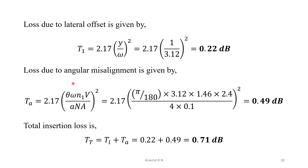Next, we calculate the loss due to angular misalignment: Ta = 2.17 × (θ × ω × n1 / (λ × NA))². Substituting all known values gives an angular misalignment loss of 0.49 dB. The total insertion loss is the sum of both: Total Loss = 0.22 + 0.49 = 0.71 dB.